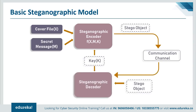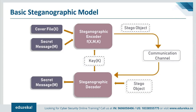On the receiver's end, if they want to extract the secret message, all they need to do is feed the stego object into the steganography decoder, which also takes the key as input. As a result, they get the secret message intended for them. To summarize: you have your cover file, your secret message, and optionally a key — all fed into the steganography encoder. The result is the stego object, which looks exactly the same as the cover object, and is sent to the receiver through a secure communication channel.